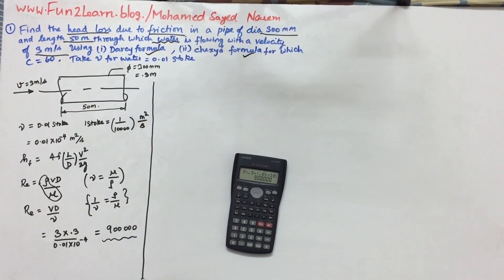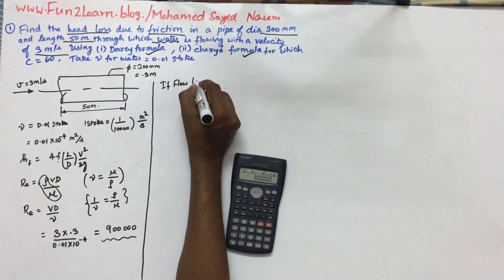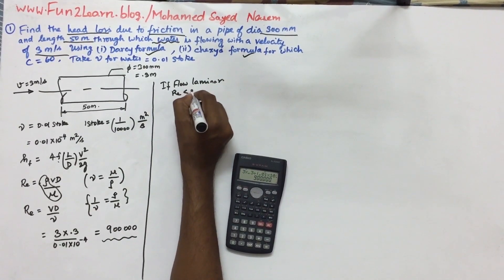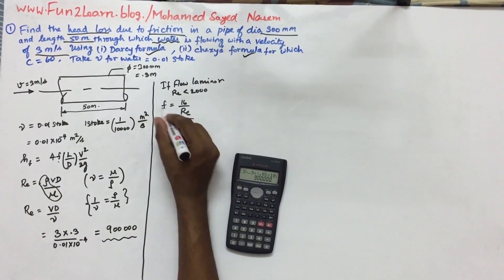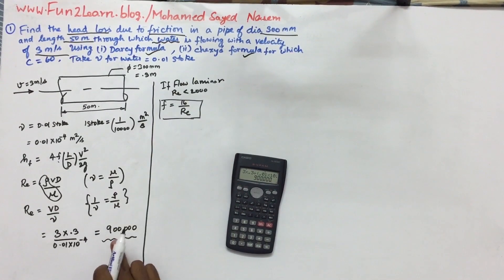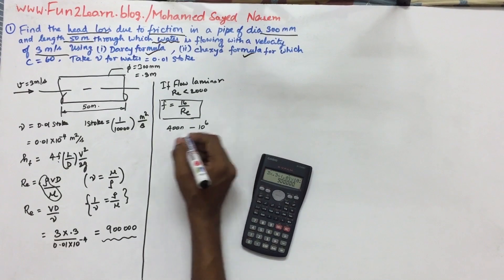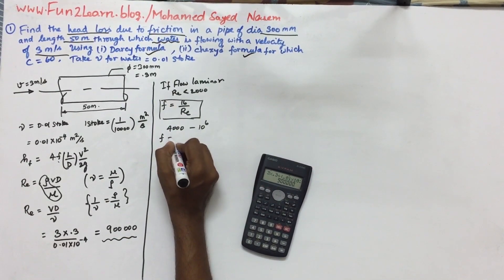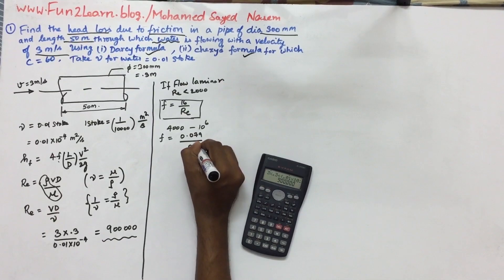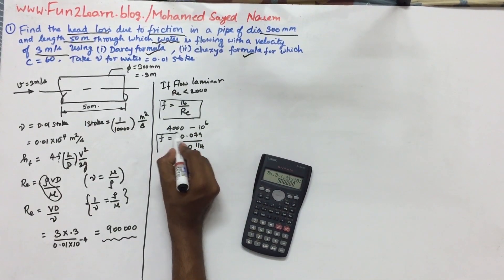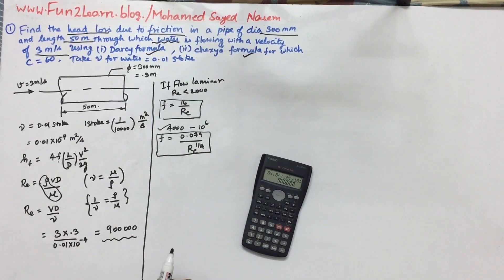Darcy Weisbach equation. For flow, if laminar, Reynolds number is less than 2000. In this case, it's not laminar. So turbulent flow is in the range 4000 to 10 power 6 Reynolds number.